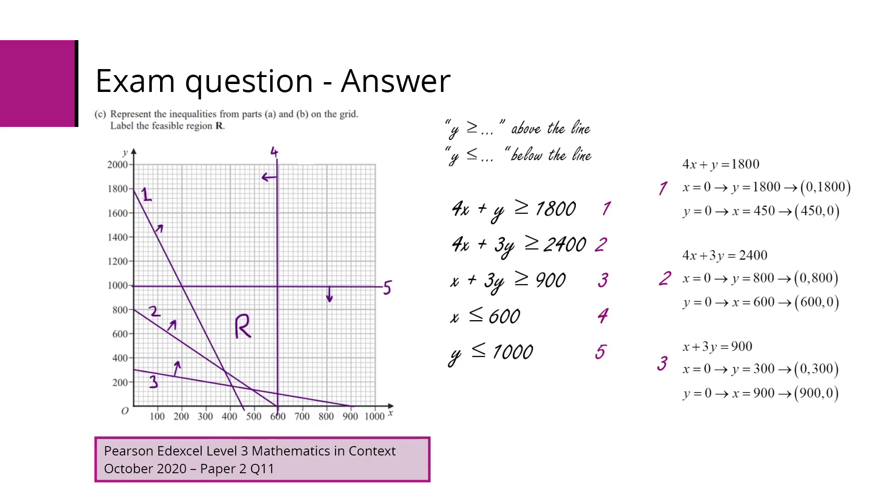And 4 and 5, the x is less than or equal to 600 and y is less than or equal to 1000 are straightforward horizontal and vertical lines. What we've got to make sure we do is indicate where we need to be. So a good point to note is that if we can see y is greater than something that means we'll be above the line. If we can see y is less than or equal to something we'll be below the line. So using that little tip, we can see that R is placed inside that region there.